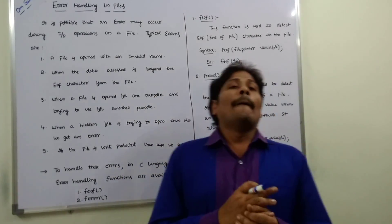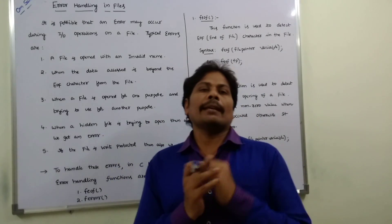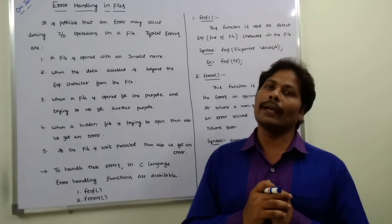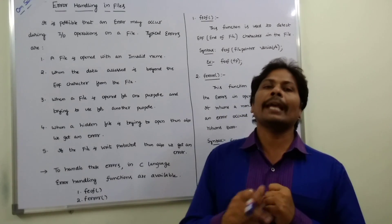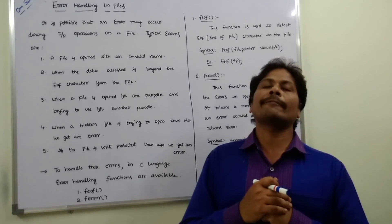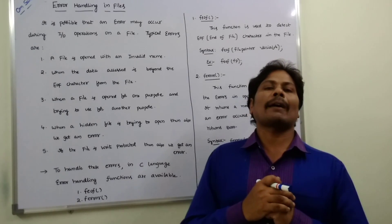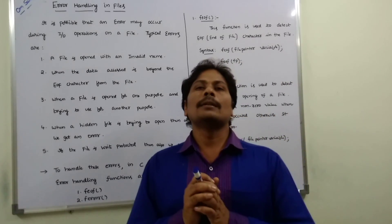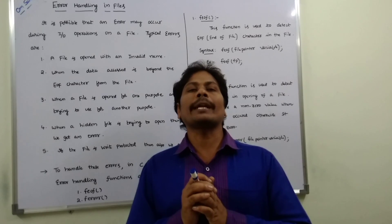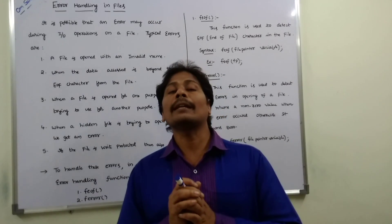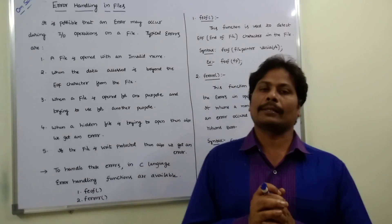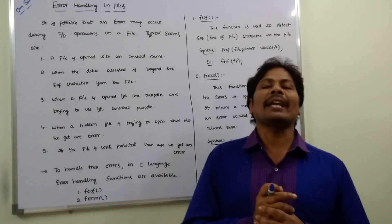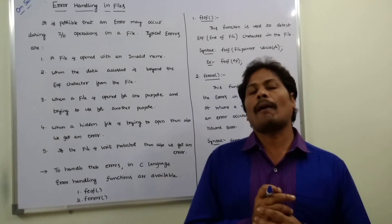The fifth error is when the data accessed is beyond the EOF character. For example, if a file contains 200 characters and you try to read the 201st character, an error will occur. These are the commonly encountered errors while performing I/O operations on a file.